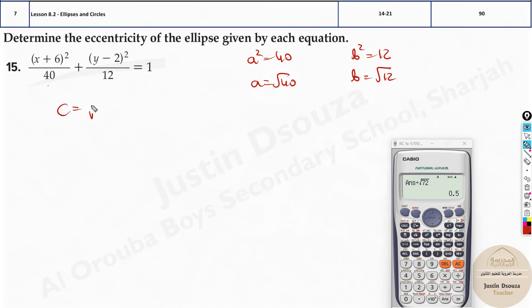C value will be equal to square root of a squared minus b squared. So c is square root of 40 minus 12. So we can directly do it. Square root of 40 minus 12, that's square root 28.